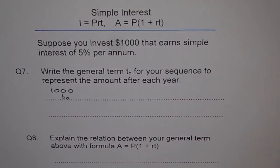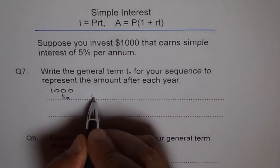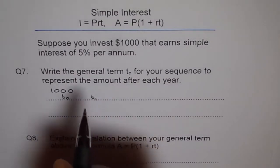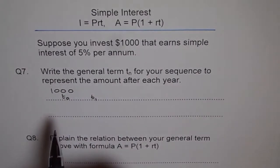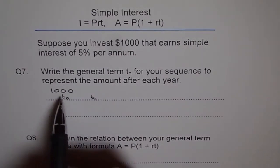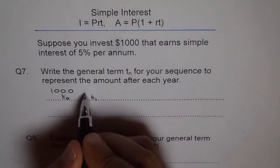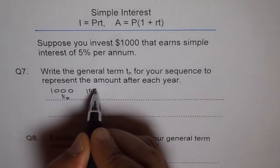So after the end of first year of investment, how much money does it become? So we know t₁ is at the end of one year, we gain 5% of this and 5% of $1000 is $50. So the amount invested increases to $1050. So it becomes $1050.